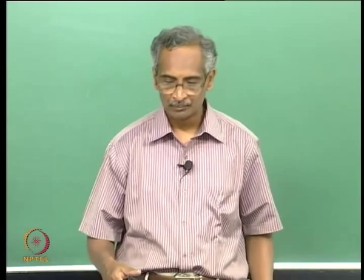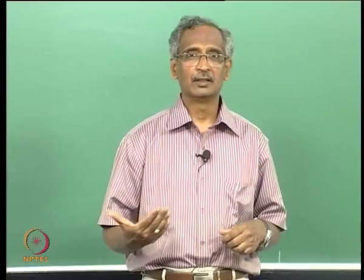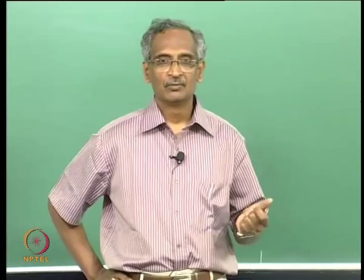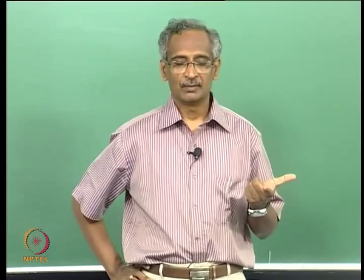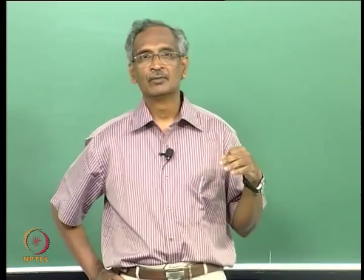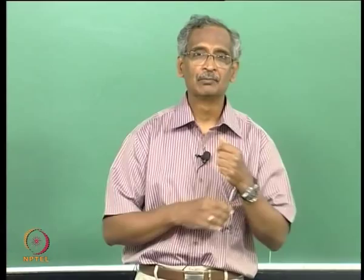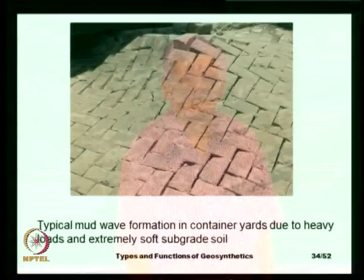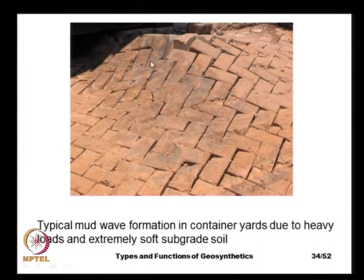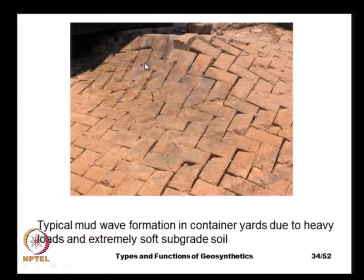This particular container yard in Chennai was built on reclaimed land, with about 1.5 to 2 meters of fill, compacted well, and topped with about 500 mm of pavement comprising boulders, aggregates, and sand-cement mix. Despite this, deformations in the soft clay were reflected back at the surface, causing typical mud wave formation.